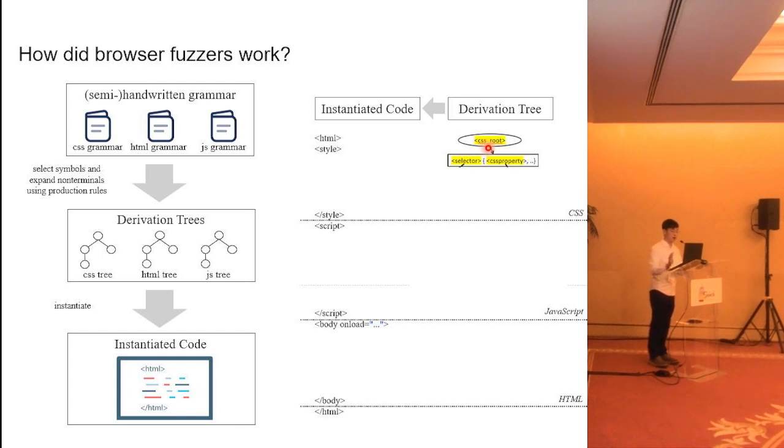The fuzzer will randomly select a production rule to expand this non-terminal symbol. Suppose it is expanded to this expression, and then we recursively expand all the non-terminal symbols of this expression. For example, we expand this non-terminal symbol to a terminal symbol, and we expand this CSS property non-terminal symbol to another expression. We expand all the terminal symbols one by one and finally reach a terminal-only expression, and we can translate this derivation tree to a CSS code.